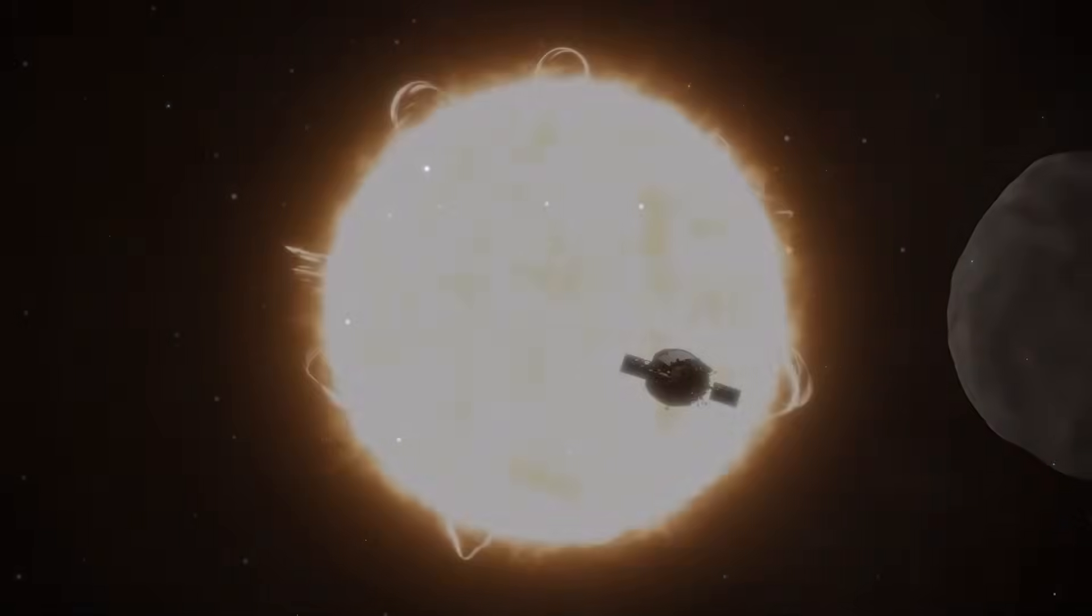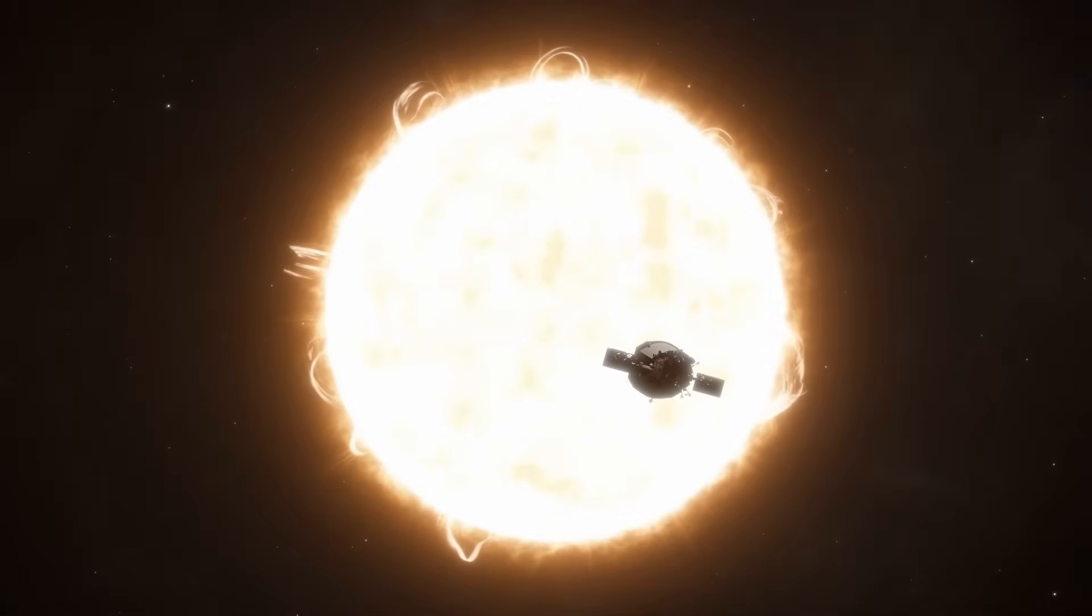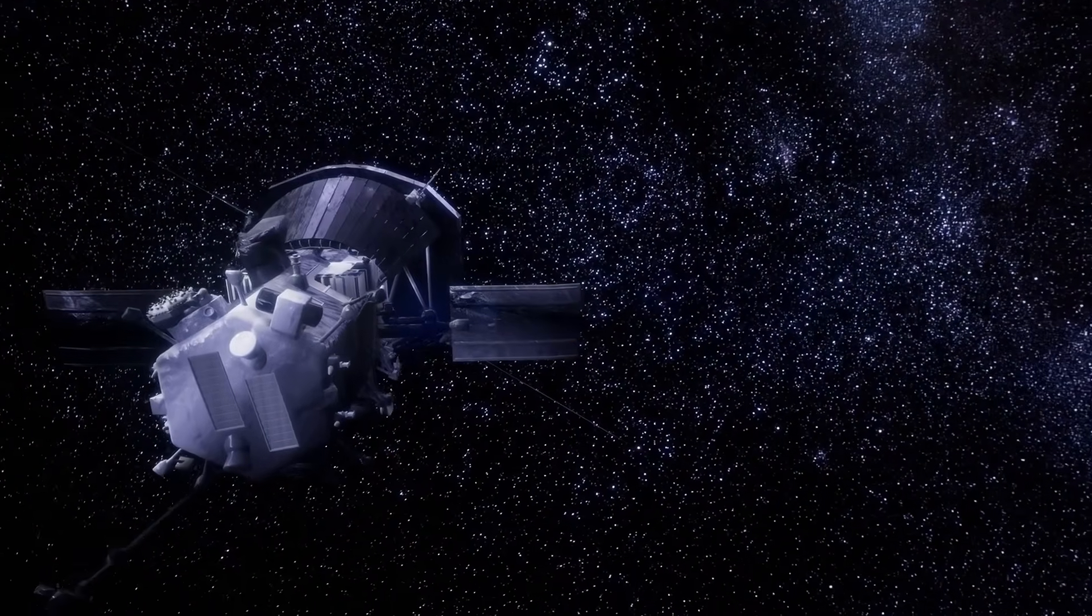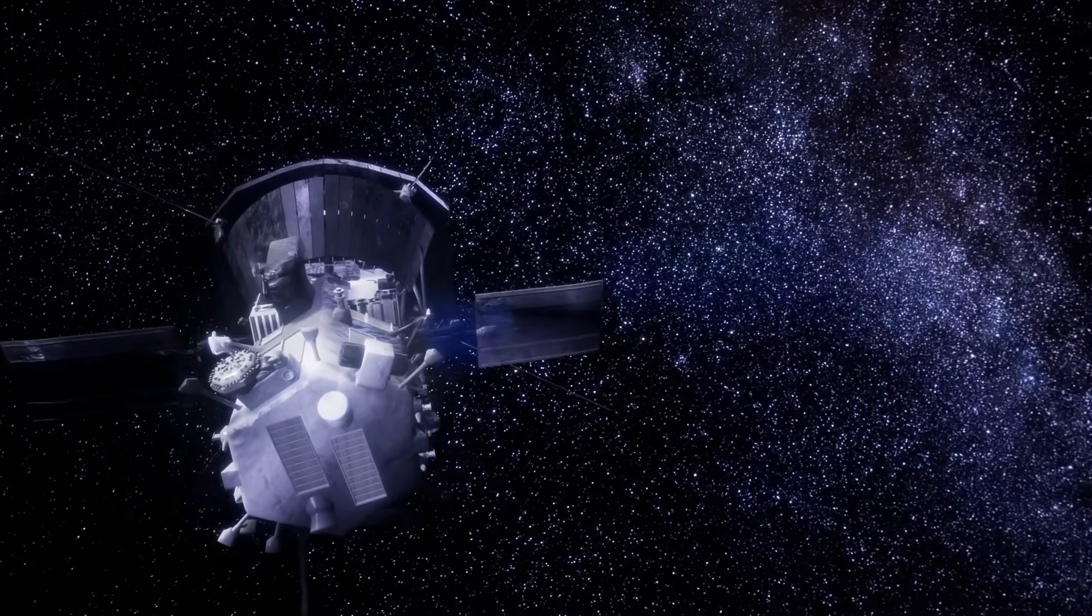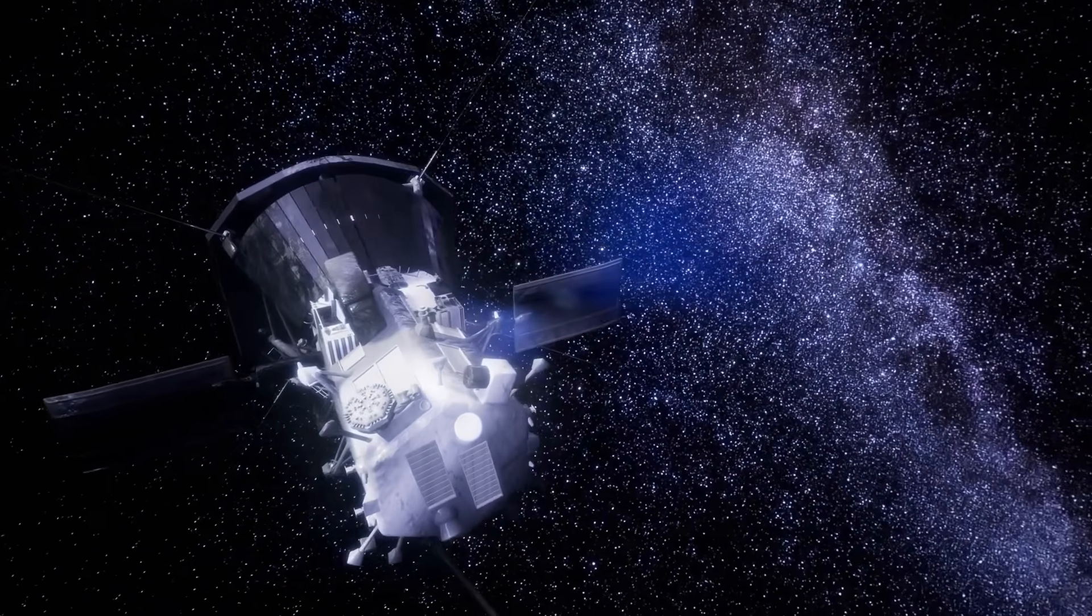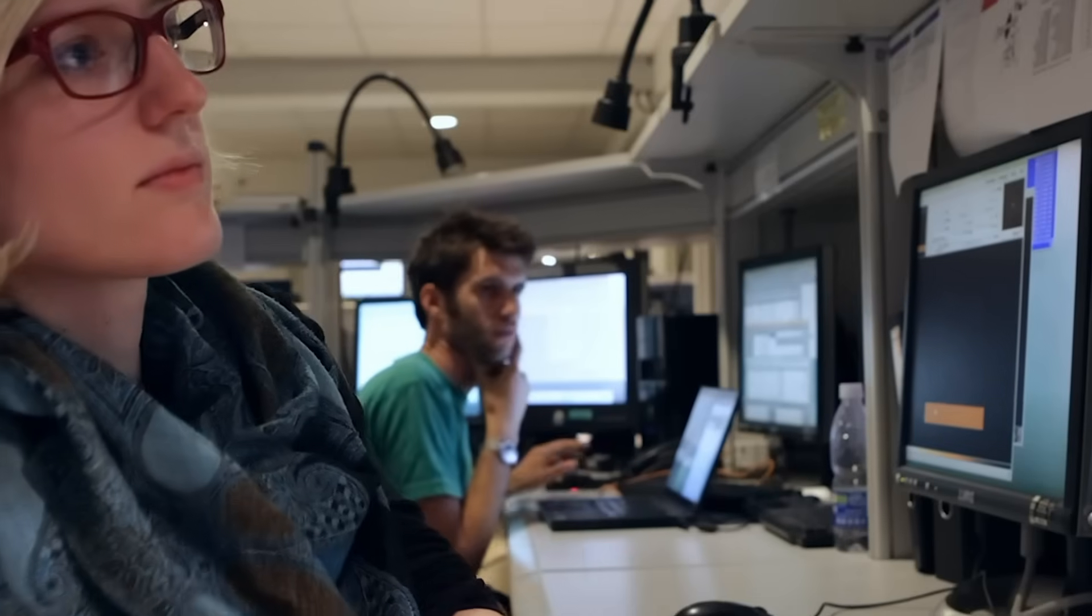But there's a problem. Getting that close to the Sun requires extreme heat shielding, like what NASA used on the Parker Solar Probe, and it would take decades to reach the target.